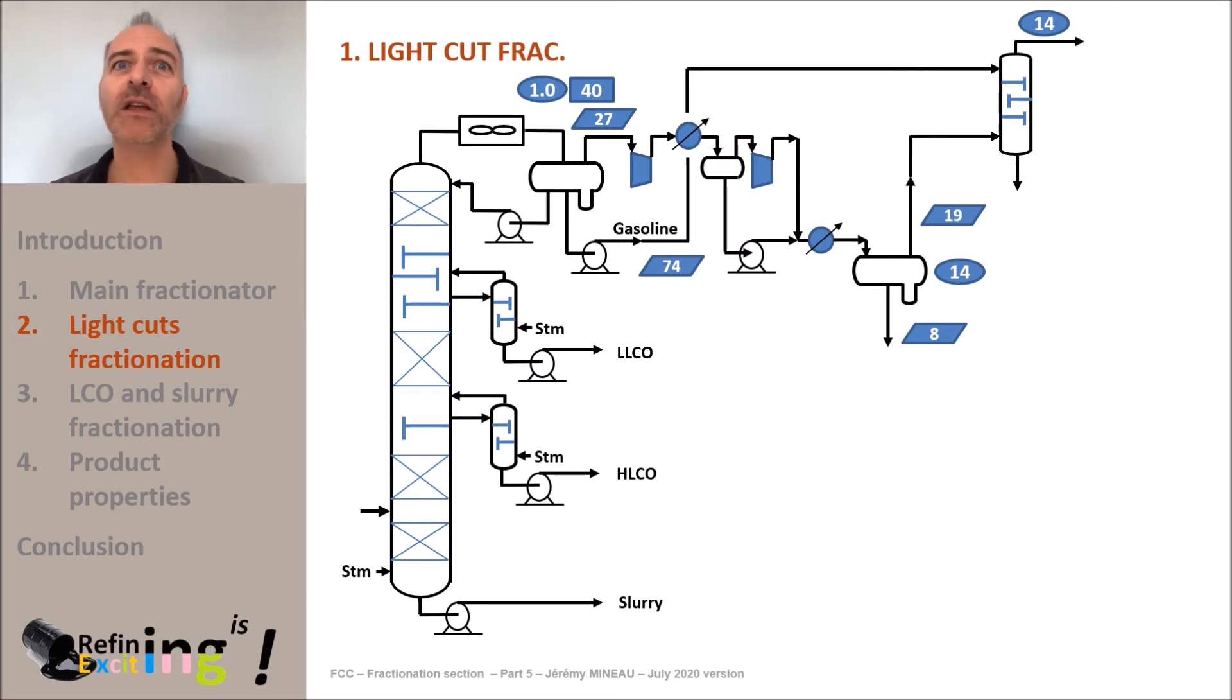For this secondary absorber, we draw a cut from the main frack and it will have an intermediate quality between that of gasoline and that of diesel. This cut is called sponge oil. This gasoline presents the advantage of not containing light molecules and will therefore be very effective in absorbing the heaviest molecules from the gas flow.